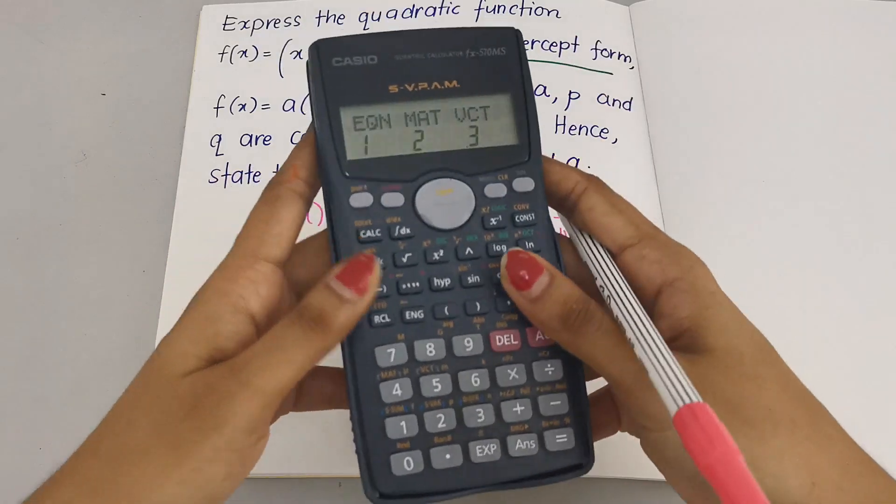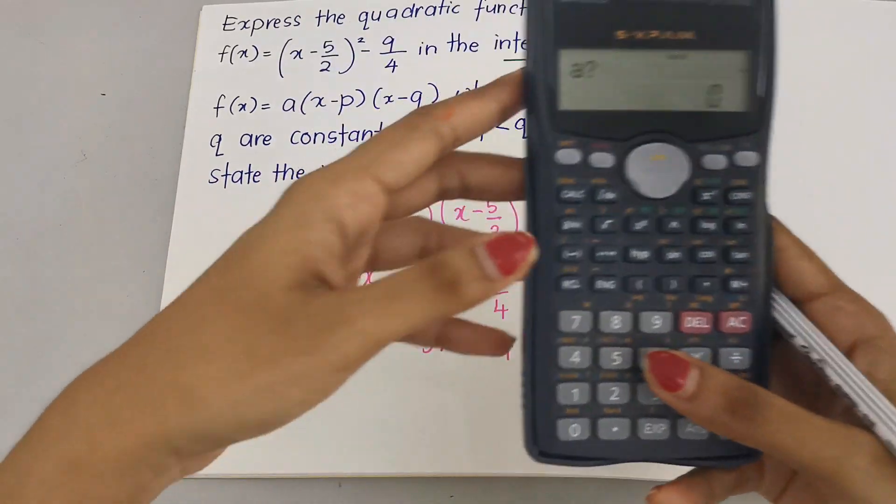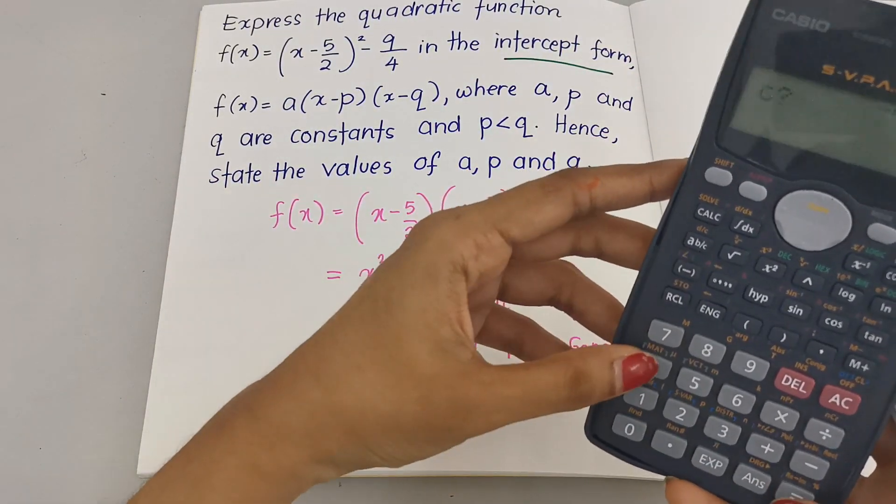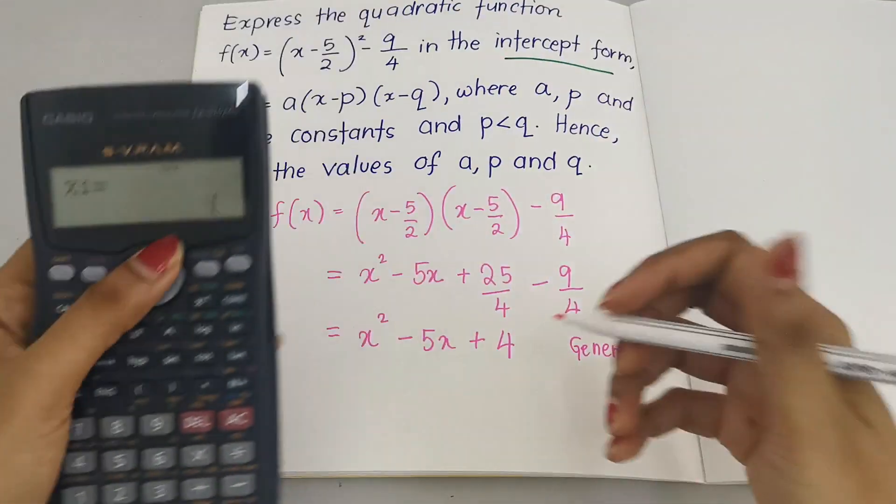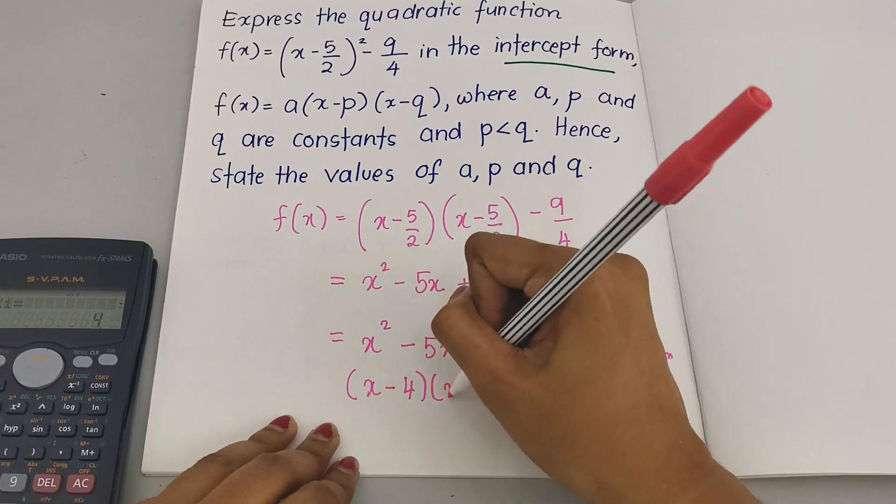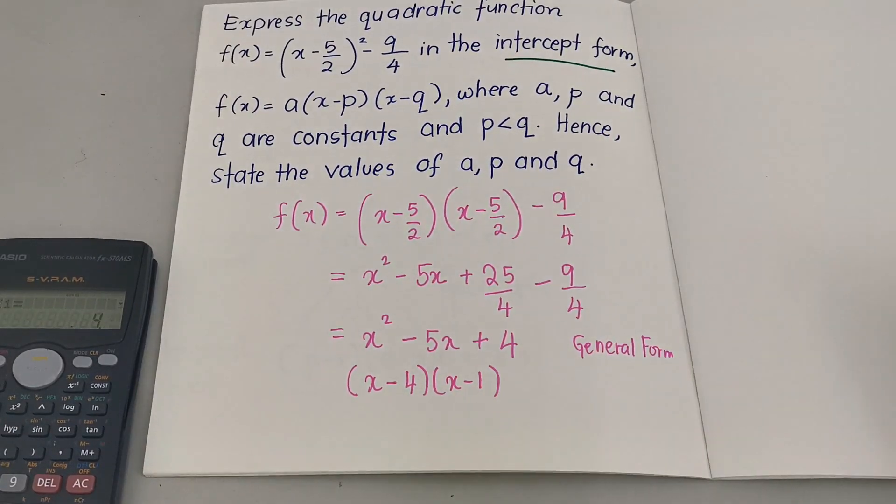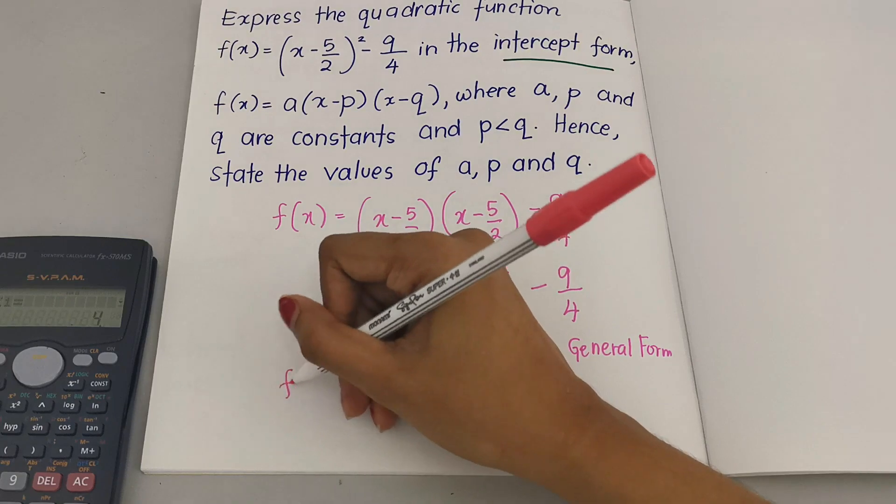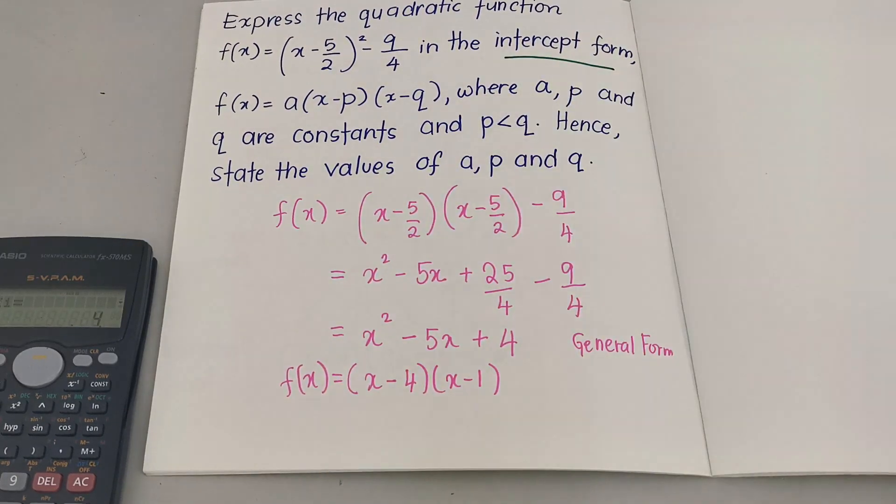Now from here, changing to intercept, we are going to use factorization. Let me use the calculator. You can also do it manually: 1, negative 5, and 4, so we have 4 and 1, so (x - 4)(x - 1). Now we already got the intercept form.